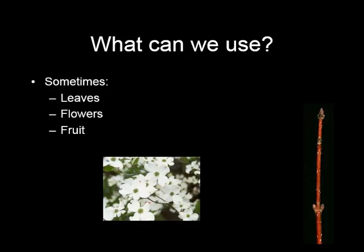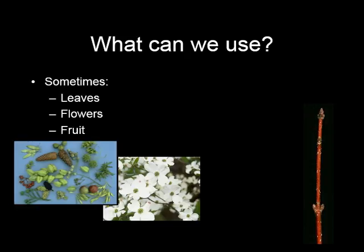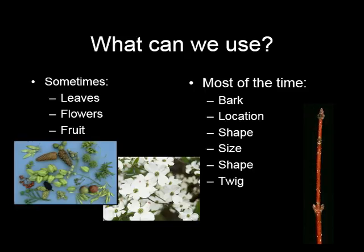What can we use? Sometimes we can use leaves, flowers, and fruit. Those are not available all the time, but most of the time we can see the bark, the location of the tree, the shape of the tree, the size of the tree. And twigs are always present for us to take a close look at to help us with identification. We will use the Tree Finder booklets, a dichotomous key, to identify our trees. A dichotomous key is a step-by-step, question-by-question method used to identify trees. It's much more precise than the alternative flip-through-the-field-guide method, but you need to know some terminology in order to use your Tree Finder booklet.